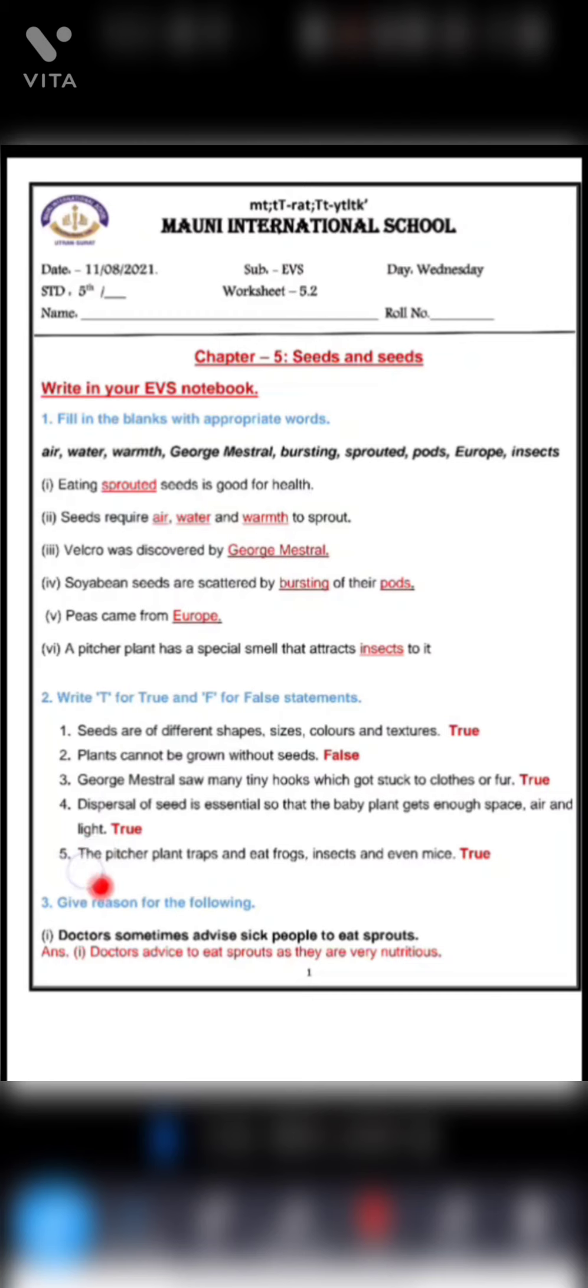Fifth one, the pitcher plant traps and eats frogs, insects and even mice. Yes, this answer is also correct. Pitcher plant eats frogs, insects and mice. It hunts them. This statement is true. Then third, give reasons for the following. Here are some statements, you have to give reasons why this statement is true.